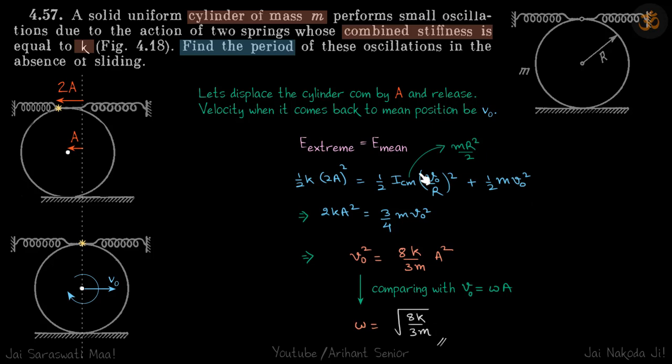And ICM for cylinder is MR square by 2. So we do that and we get V0 as a function of amplitude. So we compare it with V0 is equal to omega A and we can say omega A is root 8K by 3M.